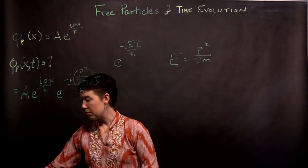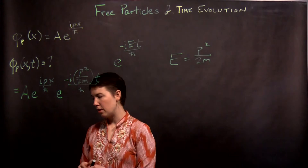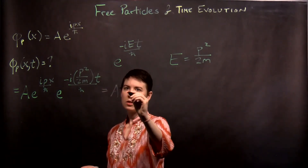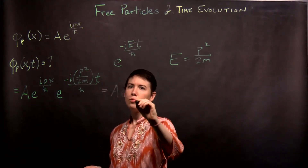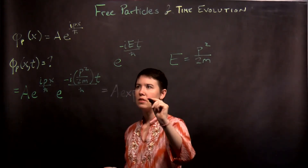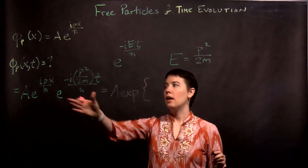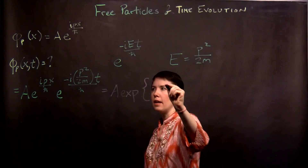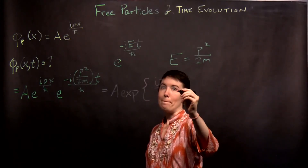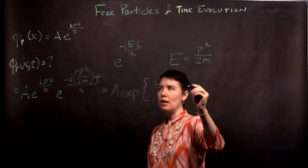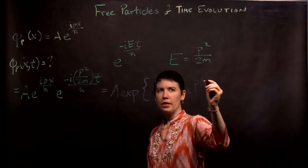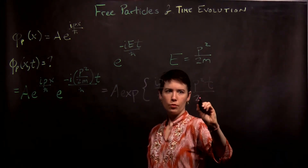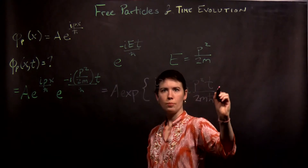Once you have those exponentials multiplied by one another, we can in fact turn that into one exponential. We can add those exponents, so this becomes e to the i px over h-bar minus i p squared t over 2m h-bar.